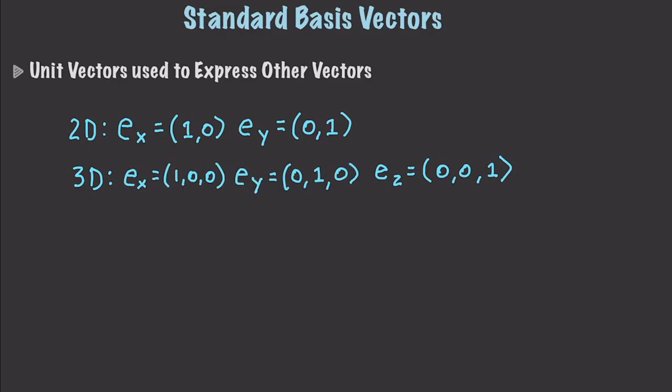And there would be the other two vectors as well on a 3D plane. And simply, the way you would use a basis vector is, let's say we have a vector A and it is 3 and 4. Well, using basis vectors, you could also represent this by saying 3 EX plus 4 EY. And I'm sure you can figure out what to do with the 3rd plane as well.